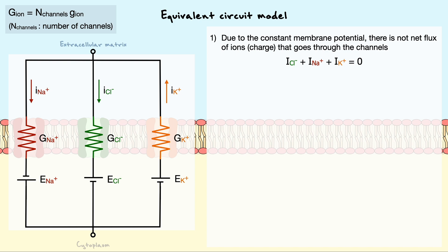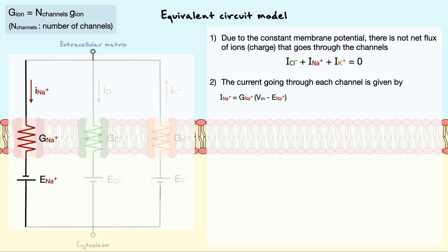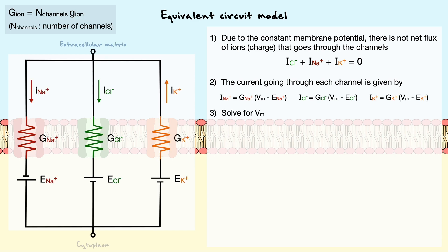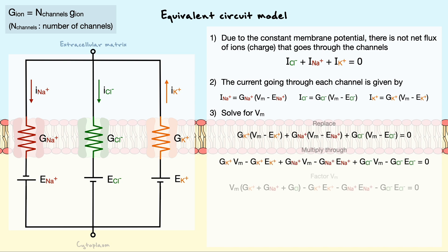Secondly, we have already established in our previous discussion that the current going through each channel is given by the modified Ohm's law where the voltage is replaced by the driving force. From there, we can solve for the membrane potential by replacing each current with their definition in step 2. Then, we can apply a bit of algebra and finally isolate Vm.